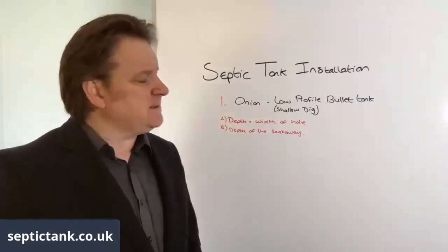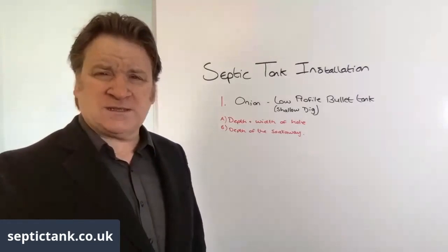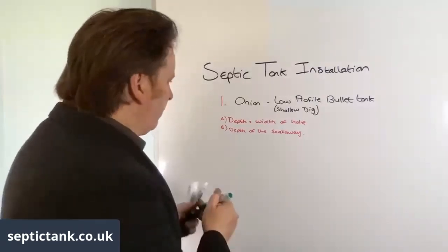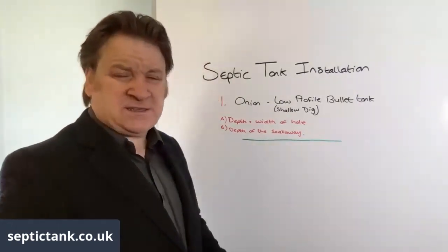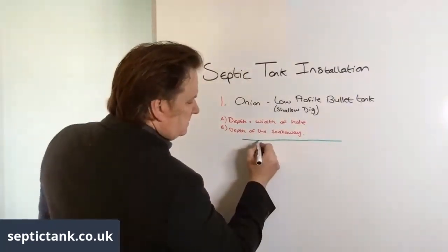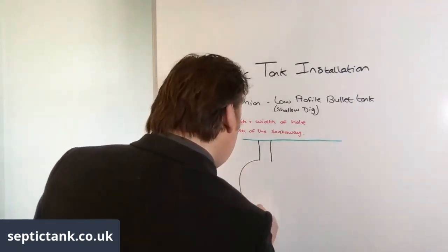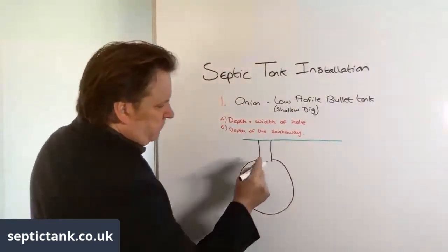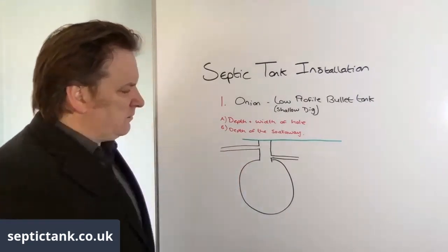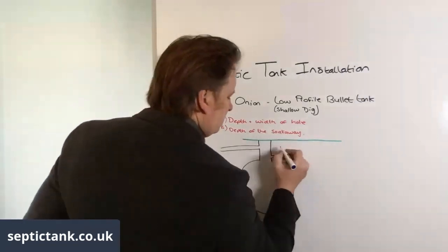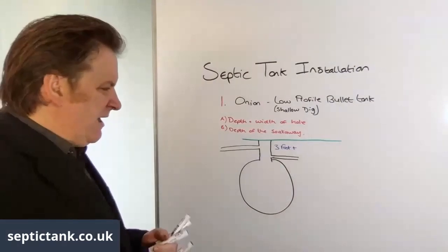On an onion septic tank, the outlet pipe is a minimum of one meter, or three feet, below the grass - and that is a lot. The depth of the soak away can make or break your installation. So on an onion tank, let's say the outlet pipe depth is around three foot plus below the grass. For the low profile tank, the depth of the hole can literally be anywhere from six inches to a foot below the grass.